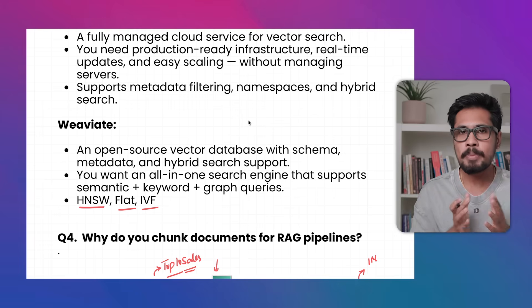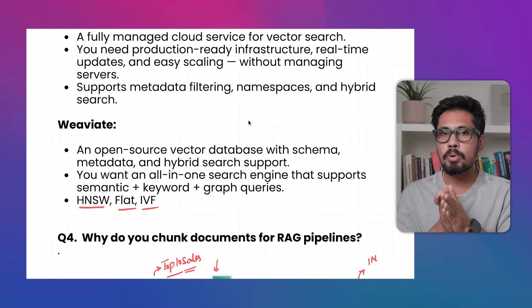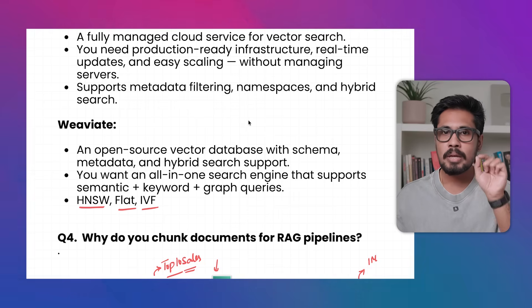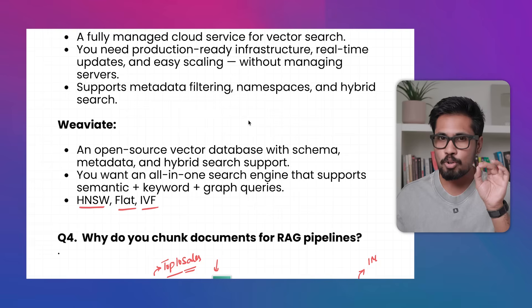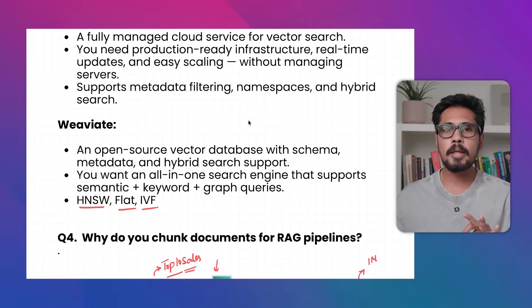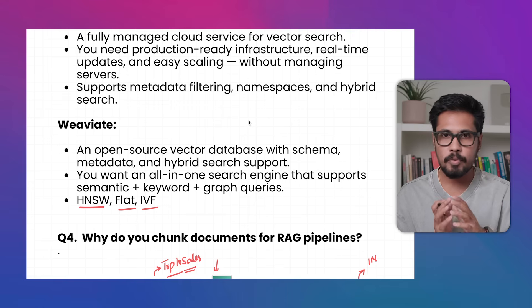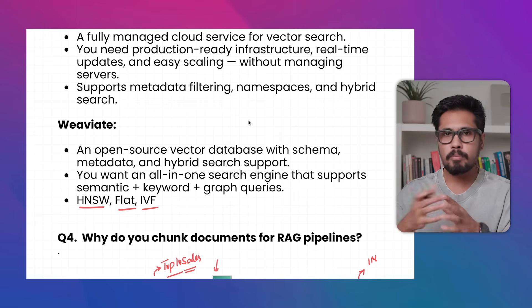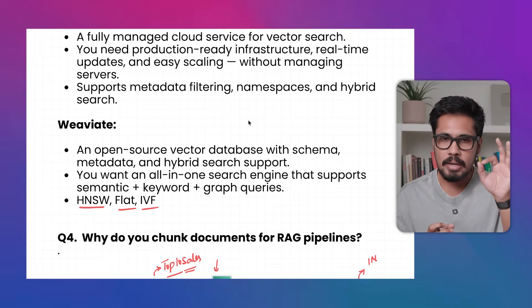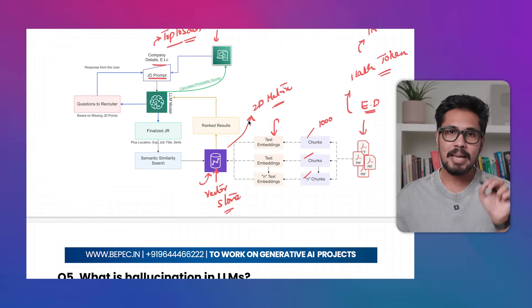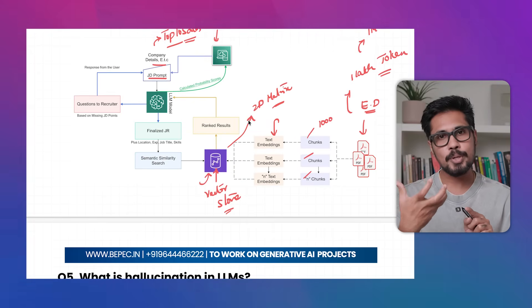When selecting a vector store or vector database, it must support semantic search that is accurate, has high speed, and uses less memory. These are the three prerequisites for selecting the right vector store — whether in-house, cloud, or on-prem. A vector store has the ability to perform search similarity using internal mathematical equations, and when a user asks a question it performs semantic search.